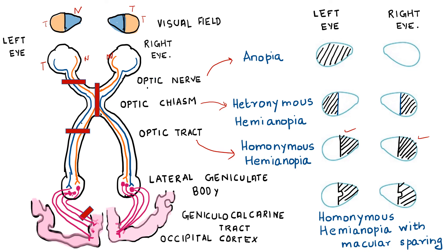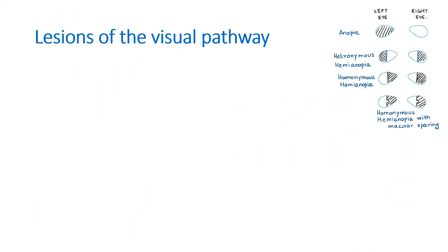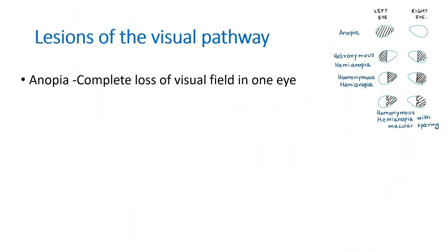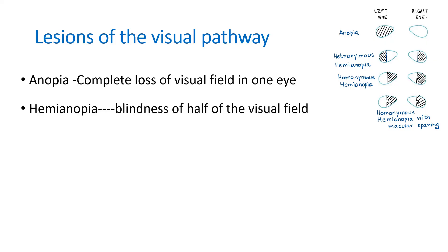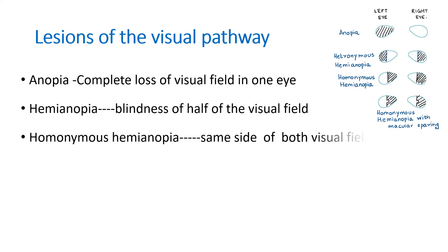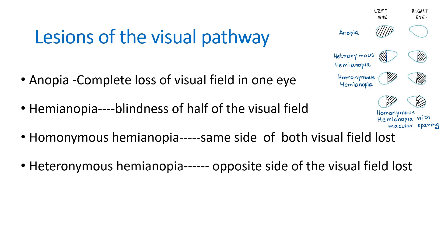These are the lesions present when the visual pathway is transected at different levels. To review the terms: anopia means complete loss of visual field in one eye; hemianopia means blindness of half of the visual field; homonymous hemianopia means the same side of both visual fields are lost; and heteronymous hemianopia means the opposite side of the visual field is lost.